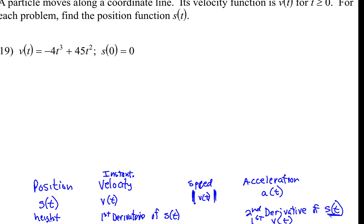But this says we need to find the position. So we are given the velocity. We're working backwards. That's integration. So we're going to set it up as an integration problem. So negative 4t cubed plus 45t squared dt. Notice we don't have x's there, so it's dt.